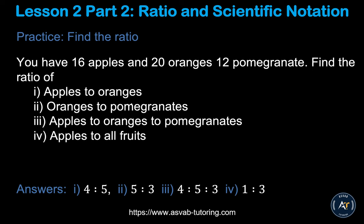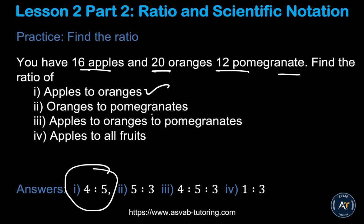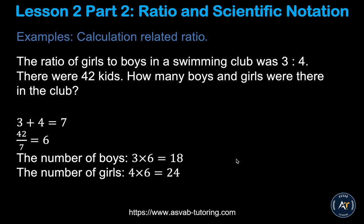Here's a practice example you can try yourself. You have 16 apples, 20 oranges, and 12 pomegranates. Find the following ratios: apple to oranges is 4 ratio 5, oranges to pomegranates is 5 ratio 3, and apple to orange to all fruits is 1 ratio 3. Try it by yourself to make sure you understand.